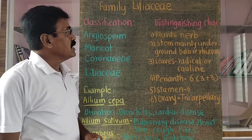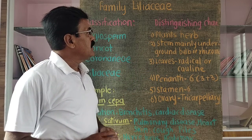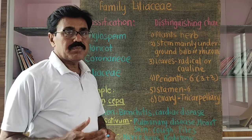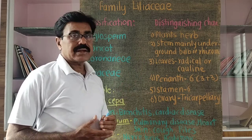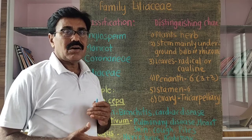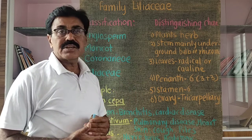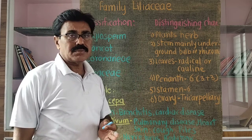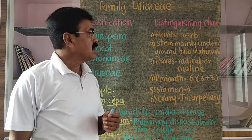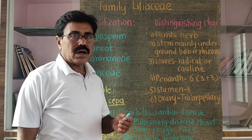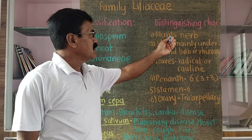The distinguishing characters of family Liliaceae are quite simple. The first important character is that the plants are herbs — perennial or sometimes annual herbs. Shrubs, climbers, and trees are totally absent. Perennial herbs have a life of more than two years, while some plants are annual or seasonal herbs.